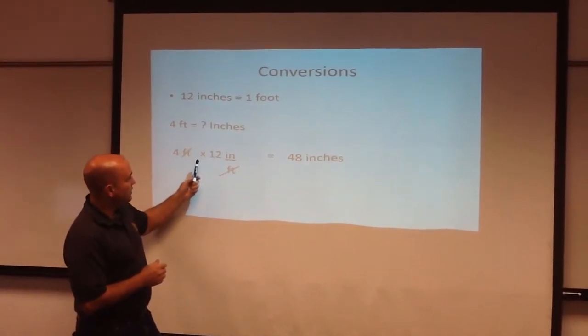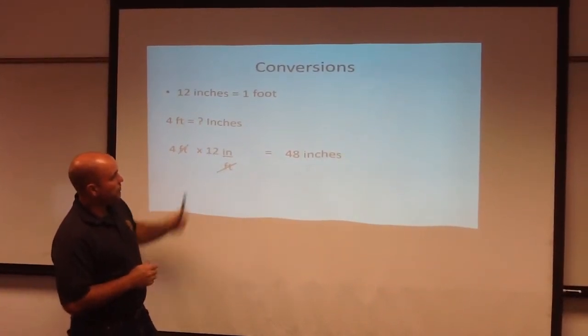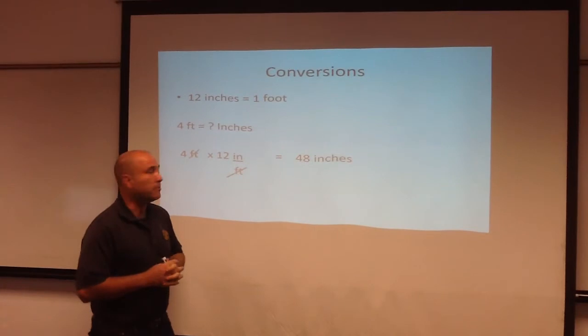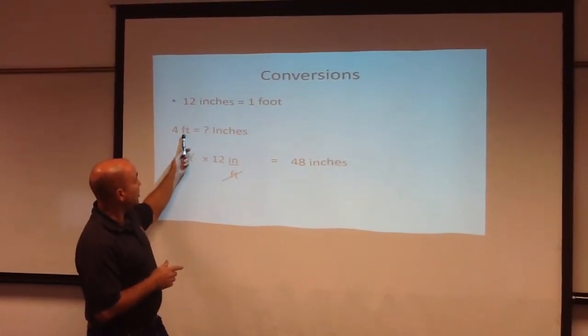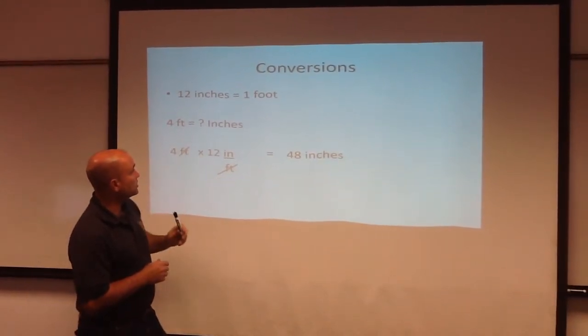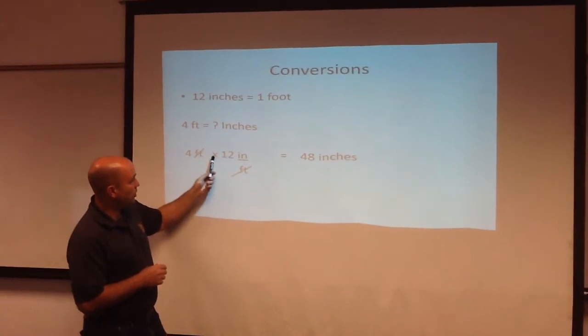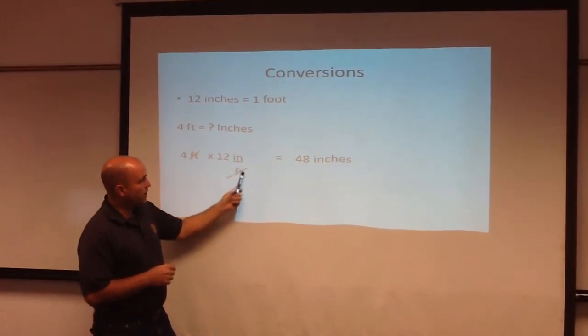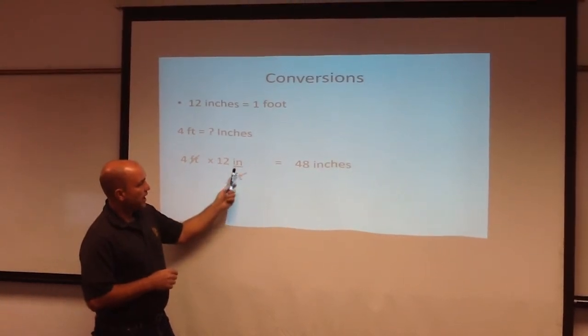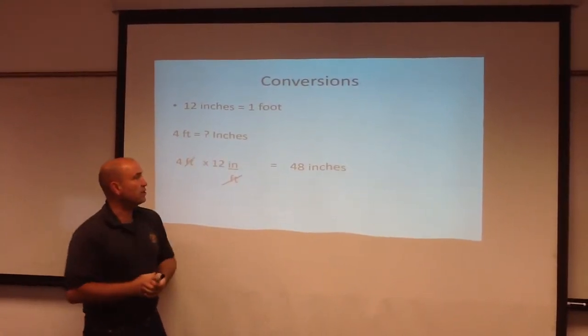Four feet times 12. But how do I know it's times 12 and not divided by 12? Well, what I do is I let the units tell me what to do. I know I want to go from feet to inches. And so what I do is I have the unit, the four feet. I know I'm going to multiply. And I'm going to put the feet down here because it's going to cancel with the feet up there. Feet divided by feet. And it's going to go away.